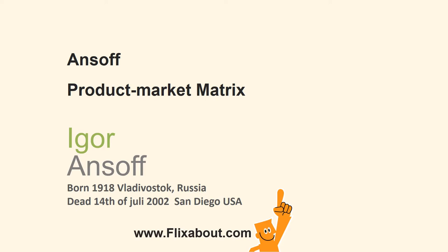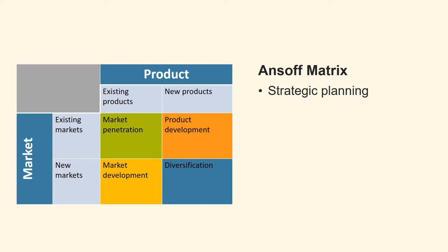The Russian-American scientist and mathematician Igor Ansoff is known as the founder of strategic management. He was called the father of strategic management and is famous for his theory of growth. The Ansoff Matrix is a strategic planning tool that provides a framework to help managers assess the differing degrees of risk associated with moving their organization forward. Ansoff's product market growth matrix suggests that a business's attempts to grow depend on whether it markets new or existing products in new or existing markets.